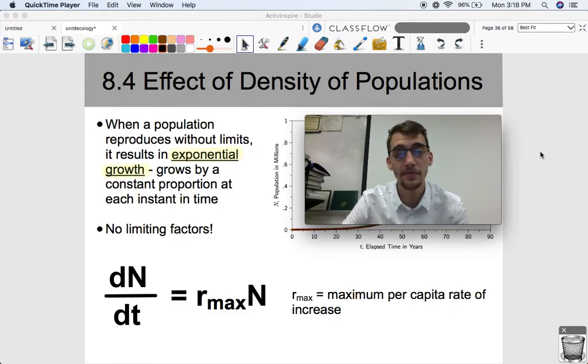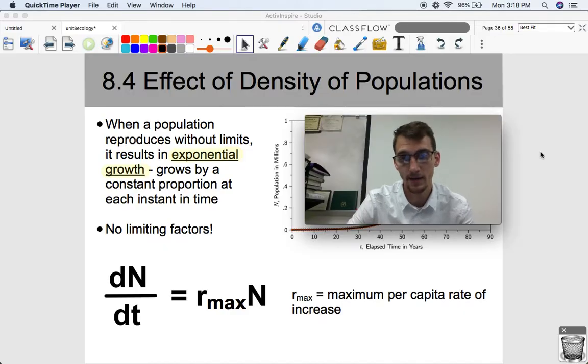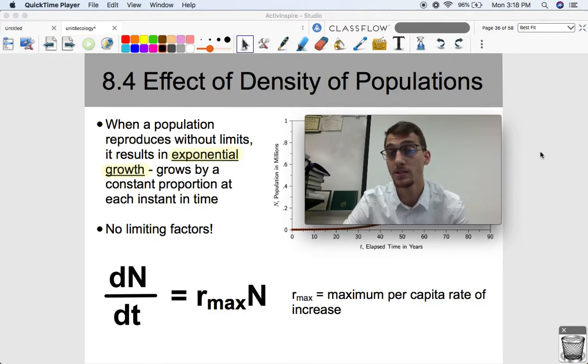In our last video, we discussed exponential growth. When a population reproduces without limits, it results in exponential growth. There's no limiting factors when we're talking about exponential growth. And what are limiting factors? Well, those are things that limit population growth.